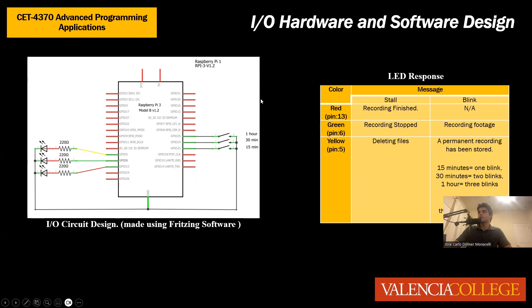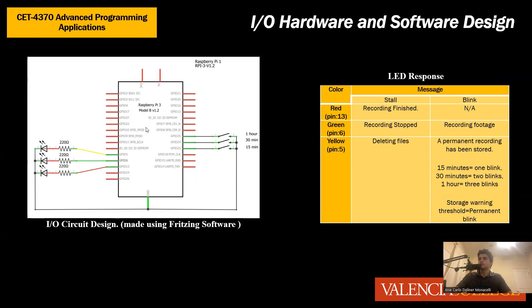Now let's discuss the internal hardware design. Here is the circuit diagram of how it's laid out. We're going to use six GPIO pins: GPIO pins 23 to 25 and GPIO pins 5 to 13. These manage the LEDs — yellow, green, and red. GPIO pins 25 to 23 access the switches: the one-hour switch, the 30-minute switch, and the 15-minute switch.